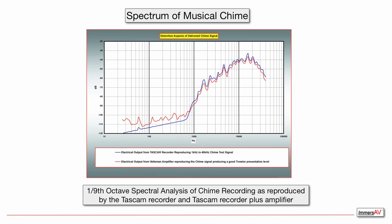Looking at the spectrum of the chime recording, I'm plotting output versus frequency. The blue curve is the output of the TASCAM recorder and the red curve is the output of the TASCAM recorder feeding the power amplifier that drives the loudspeaker. We notice a slight increase in level at lower frequencies in the red curve, which I believe is attributable to a certain amount of intermodulation distortion, but they are quite low in level and not a factor based on listening results.